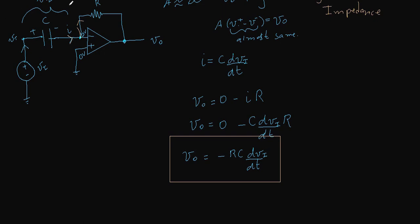This op-amp differentiator is much better than the previous passive one because it doesn't constrain RC. We were able to do this because of the virtual ground — since the voltage at the inverting node is zero, the voltage across the capacitor is simply VI, allowing us to apply the formula directly.